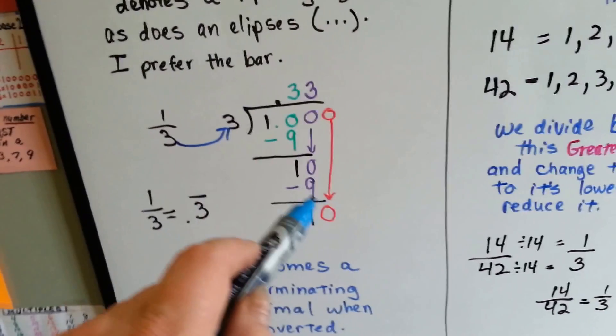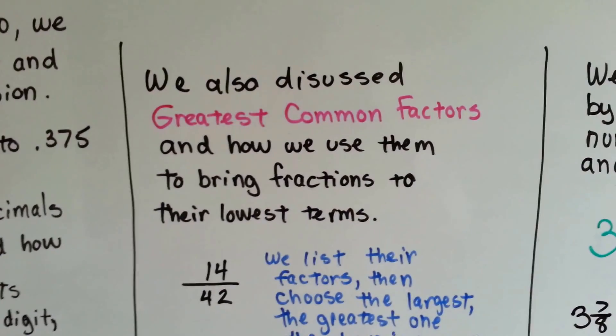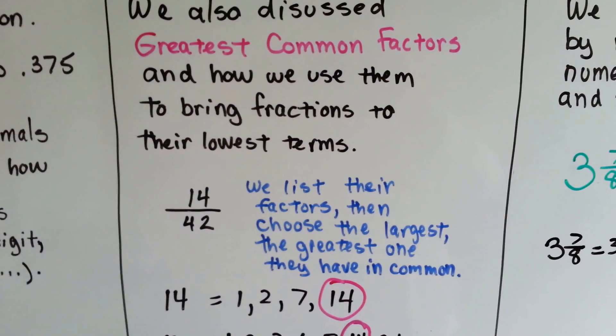It'll just continue having 3's and 10's coming down like that. We also discussed greatest common factors and how we use them to bring fractions to their lowest terms.